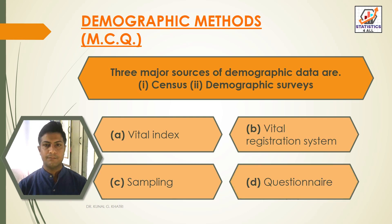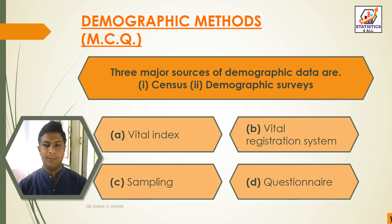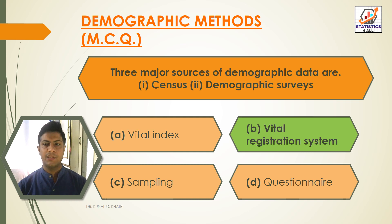Next question: the three major sources of demographic data are first — census, second — demographic surveys, and third — Option A: vital index, Option B: vital registration system, Option C: sampling, Option D: questionnaire array. The answer is Option B — vital registration system. The three major sources of demographic data are census, demographic surveys, and vital registration system.